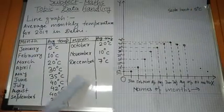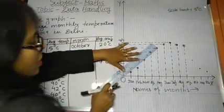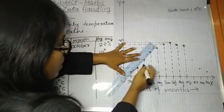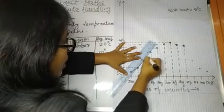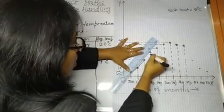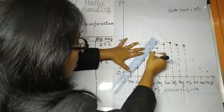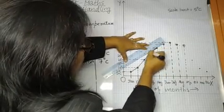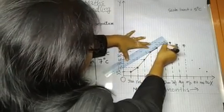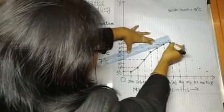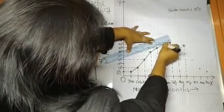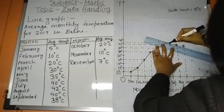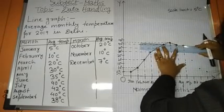Now, join all these points with the help of scale. So, first of all, we will join these two points. Then, next two. Then, next two, and so on.